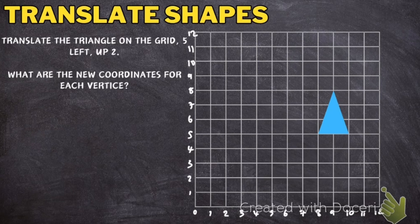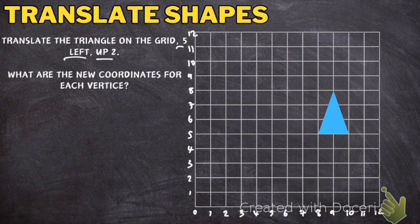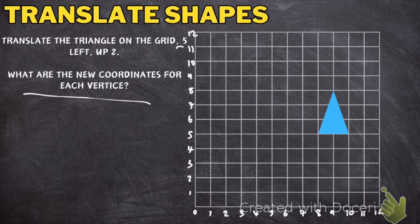So the next question it says translate the triangle on the grid 5 left up 2. What are the new coordinates of each vertice? So there's two things to do here. I first need to translate the triangle and then I need to write down in the answer what the new vertices are, what the coordinates for them are.